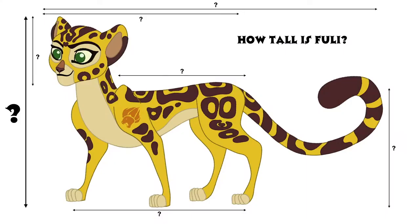I then discovered that, funnily enough, in the Lion Guard there are lots of larger animals such as hippos, zebras, rhinos, lions, and elephants. Comparing Fuli with them would get a far better result for her height. I decided to take an array of animals standing close to Fuli, take their average height, and compare Fuli with each of them to get a result. The average value from these calculations will give the final accepted value.